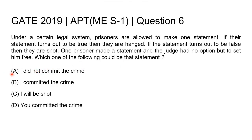Option A: the prisoner says 'I did not commit the crime.' This statement can turn out to be true or false depending upon the investigation, and then the judge can punish the prisoner according to the law. Option B: the prisoner says 'I committed the crime.' This statement again, like option A, can turn out to be true or false depending upon the investigation, and the judge is free to punish the prisoner accordingly.